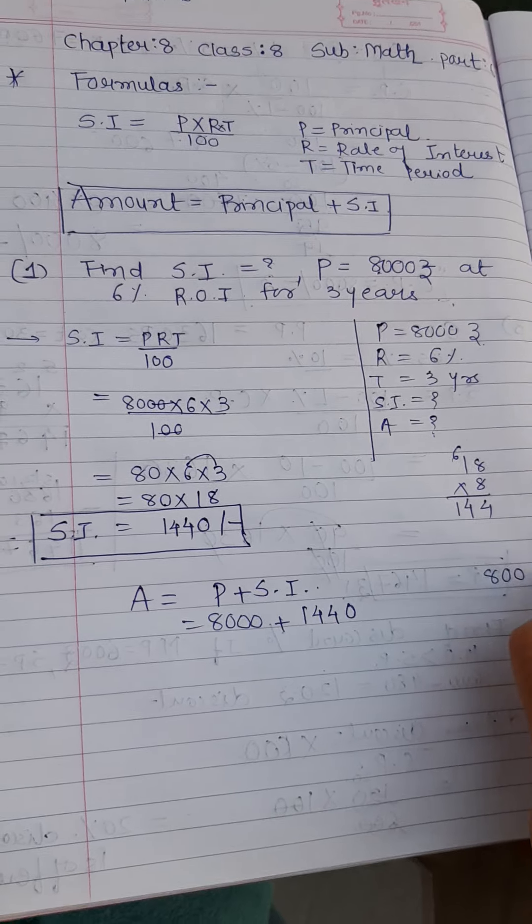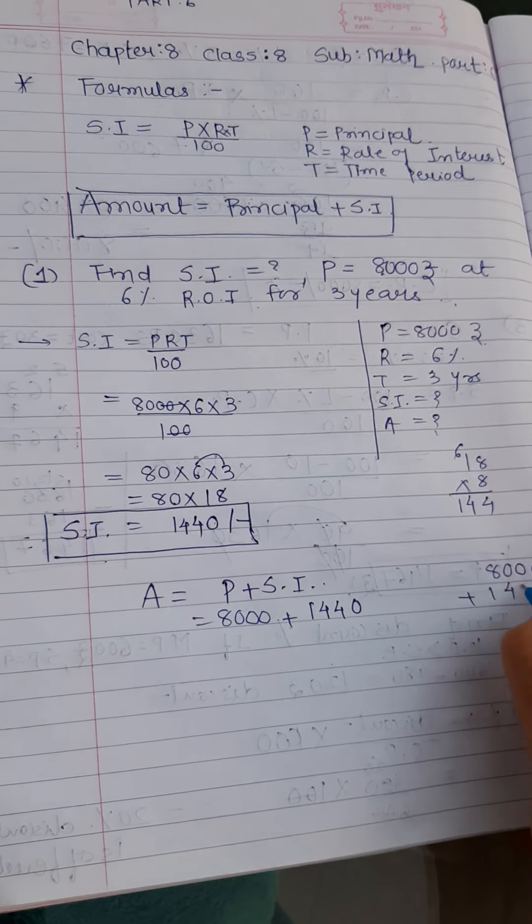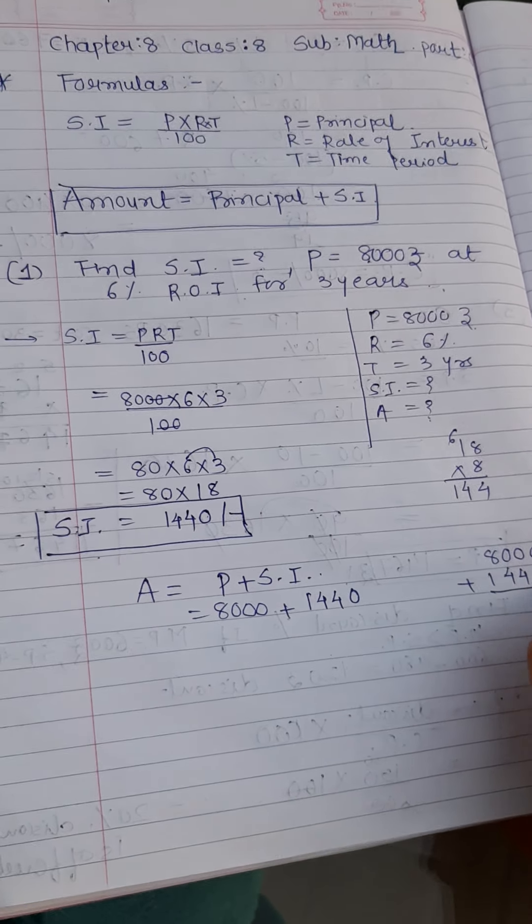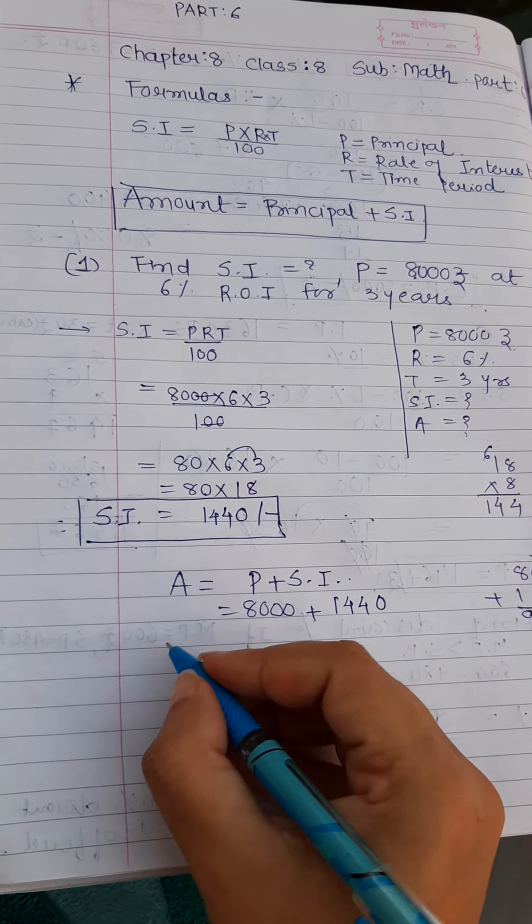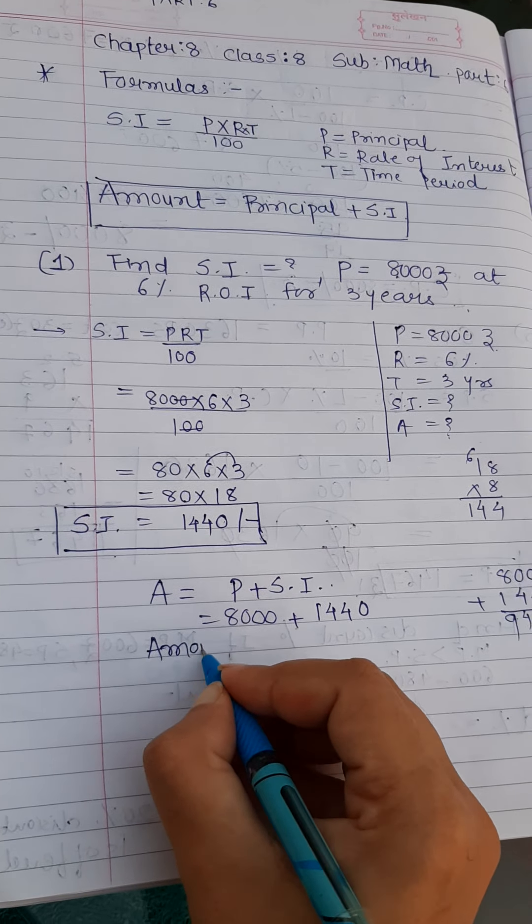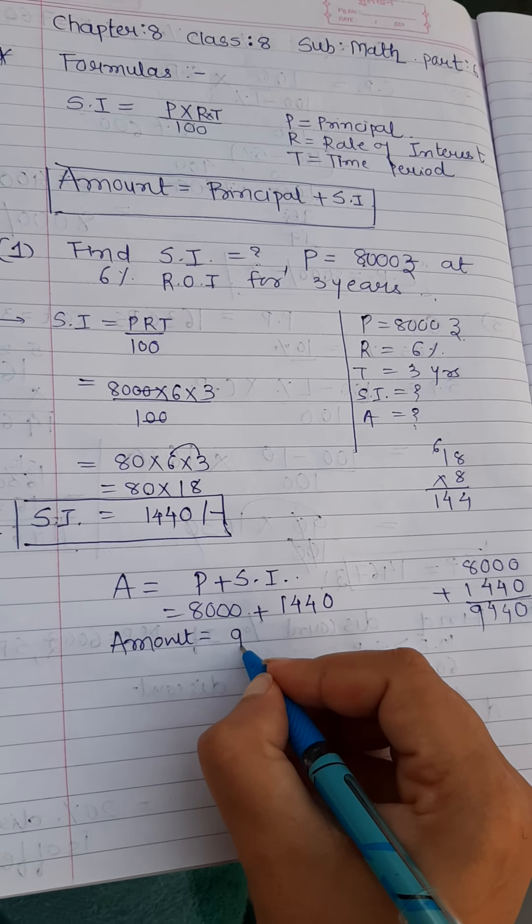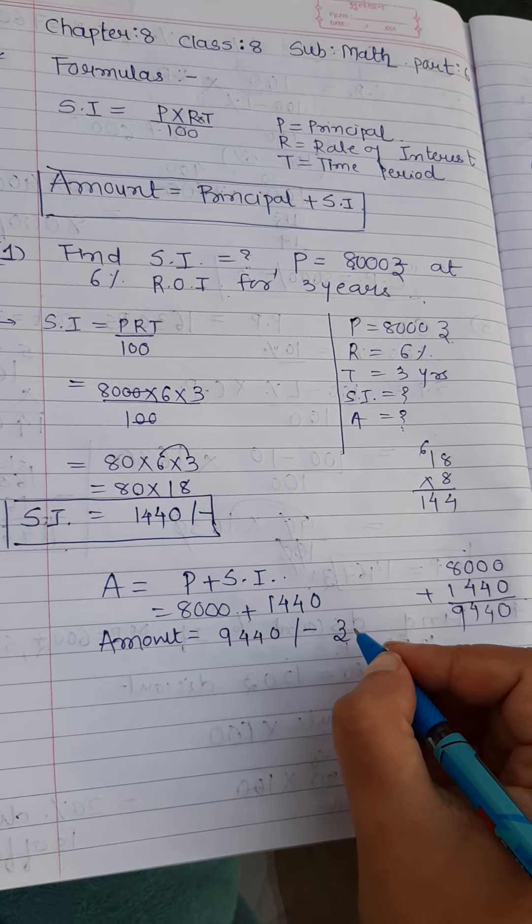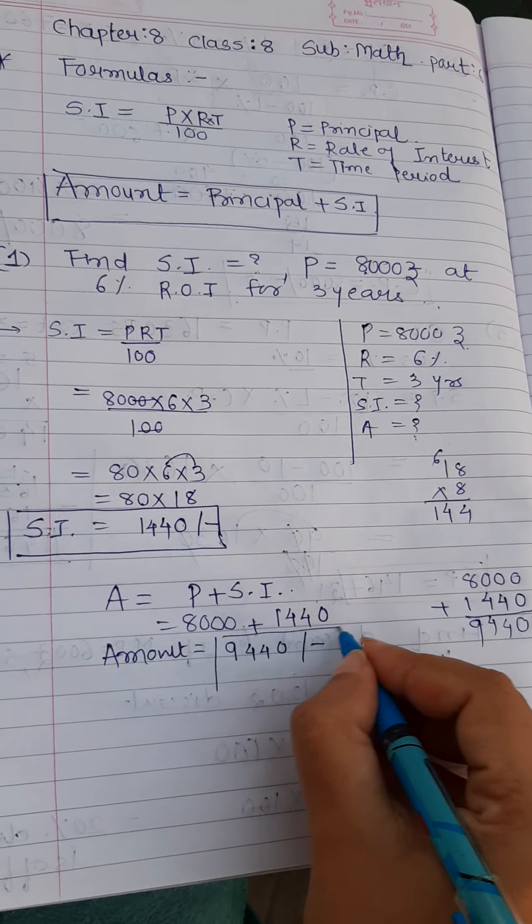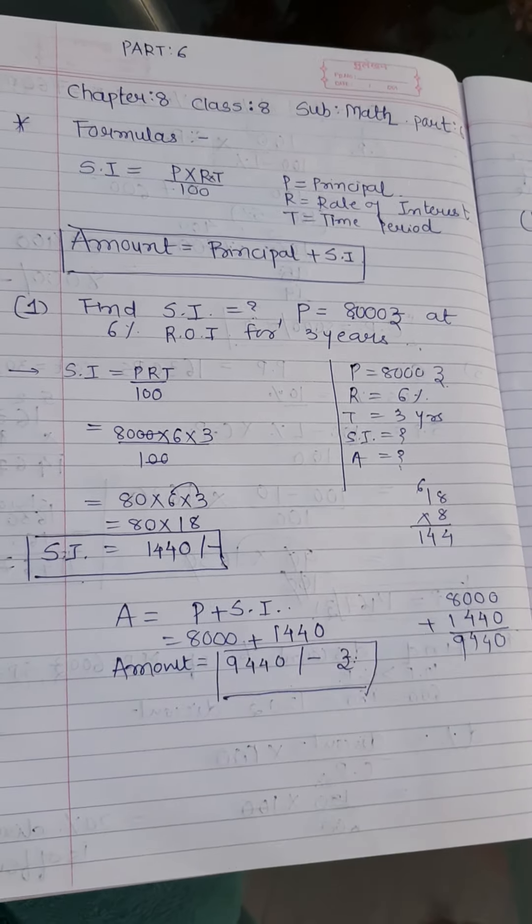So imagine I am getting 8,000 plus the simple interest which is 1,440. That is 0, 4, 4, 9. So I will receive the amount as 9,440 rupees. So this is simple interest.